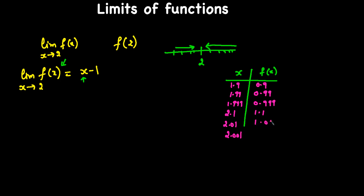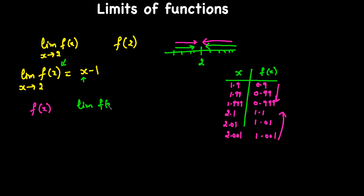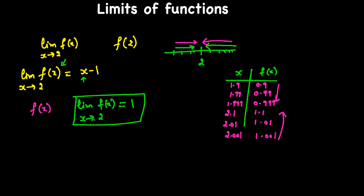From the table we can notice that as x gets close to 2 from either side, the value of f(x) is getting closer to 1. It's going towards 1 from both sides. That means the limit of f(x) as x approaches 2 is equal to 1.